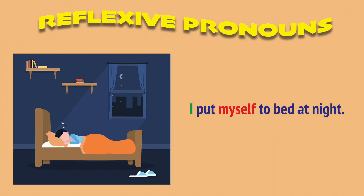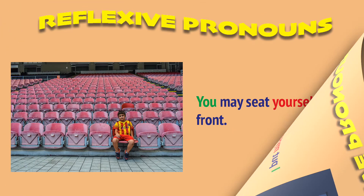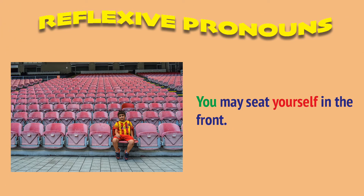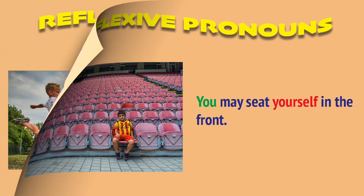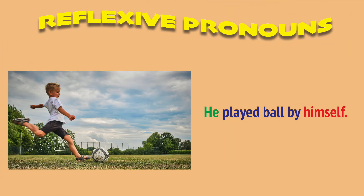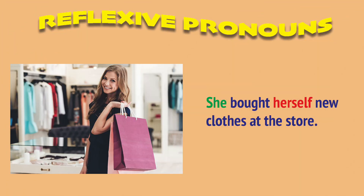The following are some sample sentences using subject pronouns and reflexive pronouns — subject pronouns are in green and reflexive pronouns are in red. I put myself to bed at night. You may seat yourself in the front. He played ball by himself. She bought herself new clothes at the store.